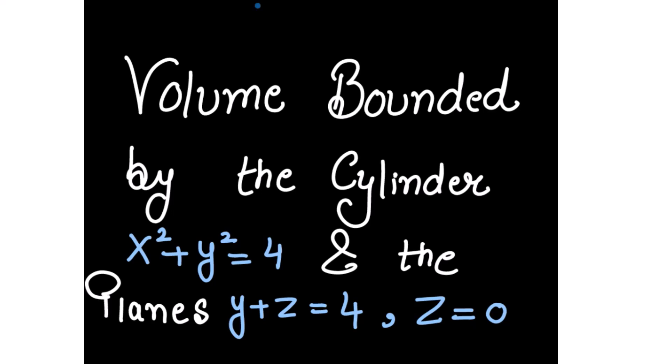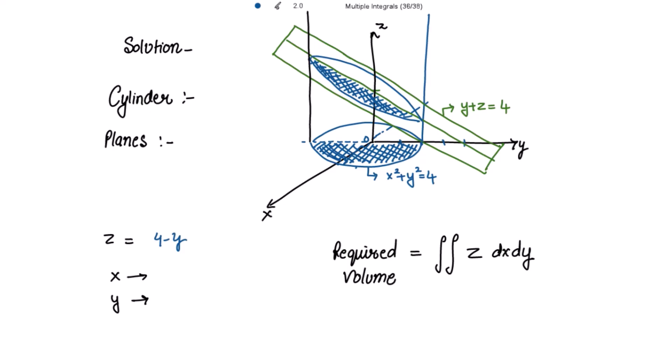It is required to find the volume bounded by the cylinder x² + y² = 4 and the planes y + z = 4 and z = 0. So this is your cylinder x² + y² = 4, and the planes are y + z = 4 and z = 0.